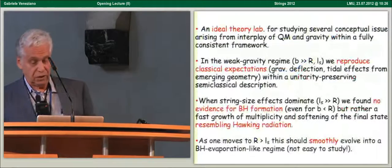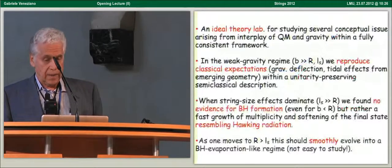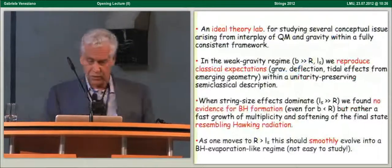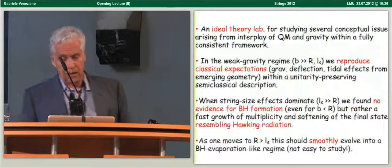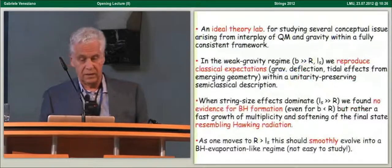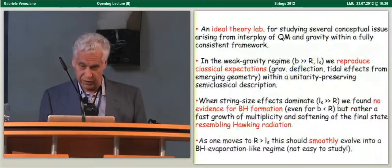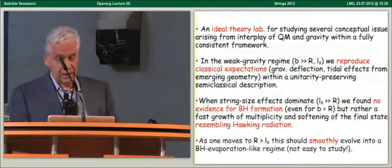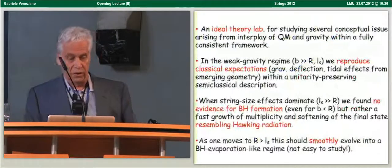And this is all done within a unitarity preserving semi-classical description. Then one can go to the region which was on the bottom left of the previous slide, in which string size effects dominate, the string length can be taken to be much bigger than the Schwarzschild radius by playing with the string coupling, and there we found no evidence indeed as expected for black hole formation, even if we went to impact parameters smaller than the Schwarzschild radius. Rather, we noticed a fast growth of multiplicity.